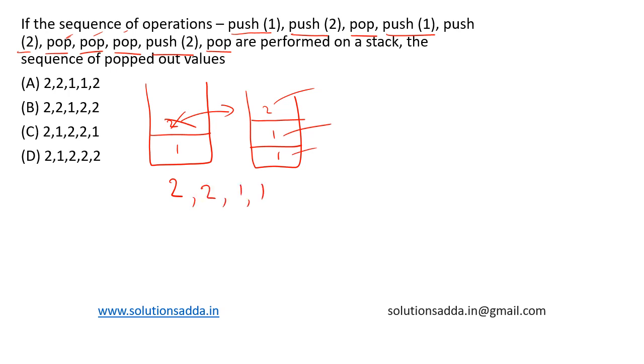2, 1, 1. Now the stack is empty, so right now we are at this point. Now we push 2 onto the stack, then we pop it. So we write 2. So the sequence of pop operations are 2, 2, 1, 1, 2.